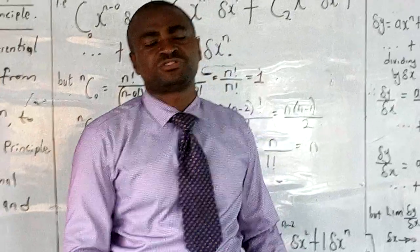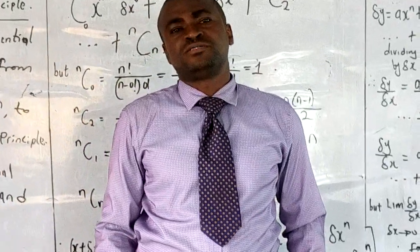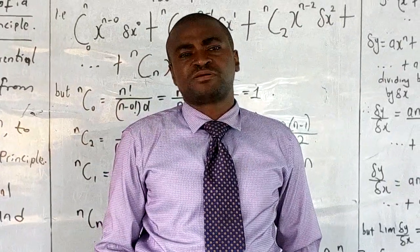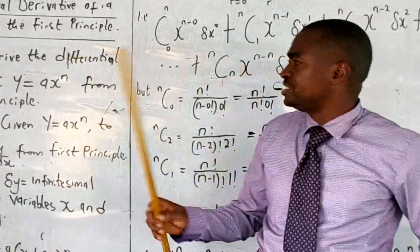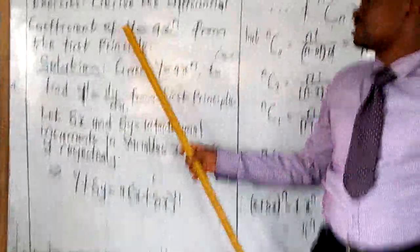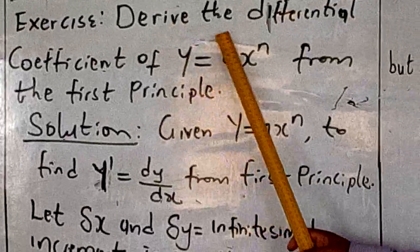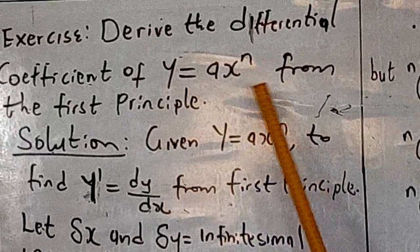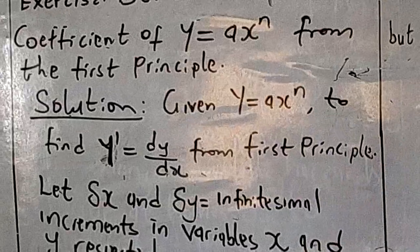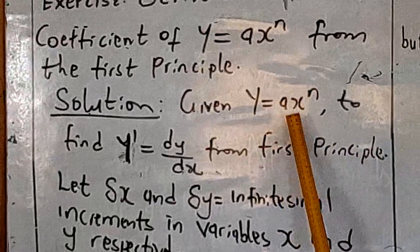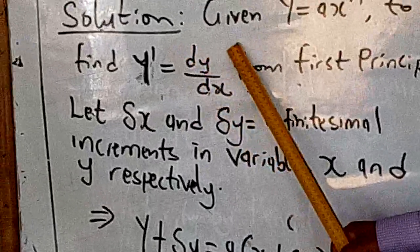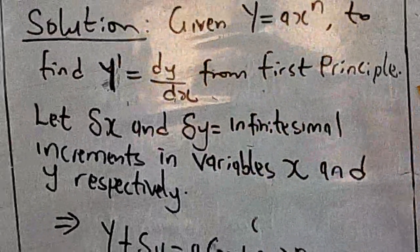How do you find the rate of change of a dependent variable with respect to an independent variable? We are taking on the general function. Look at this exercise: derive the differential coefficient of y equals ax raised by n from the first principle. We are given y equals ax^n and we need to find y prime — that is, dy/dx — from the first principle.